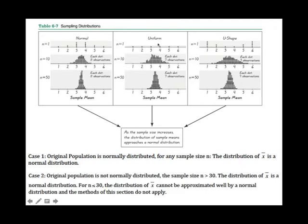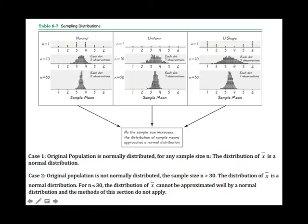In Case 2, the original population is uniform when n equals 1. We try increasing the sample size, and at n equals 10, the distribution of the sample means cannot be approximated well by a normal distribution. So we keep increasing the sample size until n equals 50, and then we can see the distribution of the sample means becomes a normal distribution.